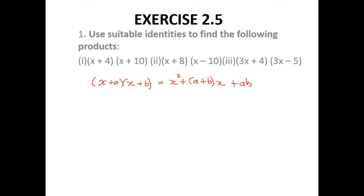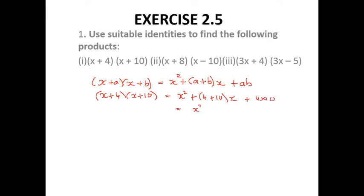The formula we apply to solve this sum: starting with (x + 4)(x + 10), therefore x² + (4 + 10)x + 4×10, which gives x² + 14x + 40. You can now do questions 2 and 3 by yourself using the same formula. Now the second sum.